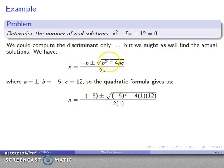b, negative 5, negative 5, a, 1, c, 12, a, 1. And I get this nice little expression, which I can evaluate using the operations of integer arithmetic.